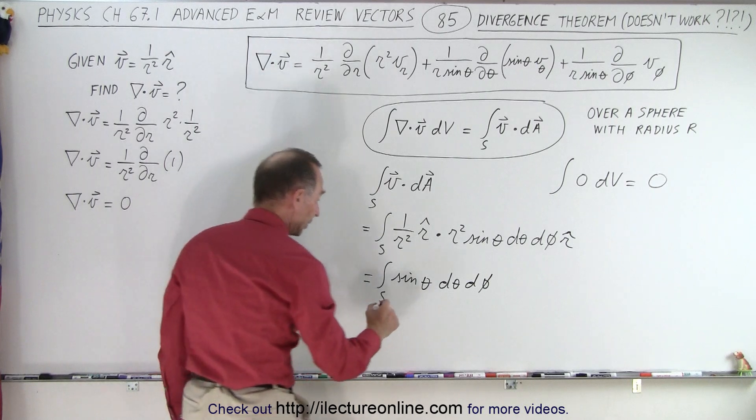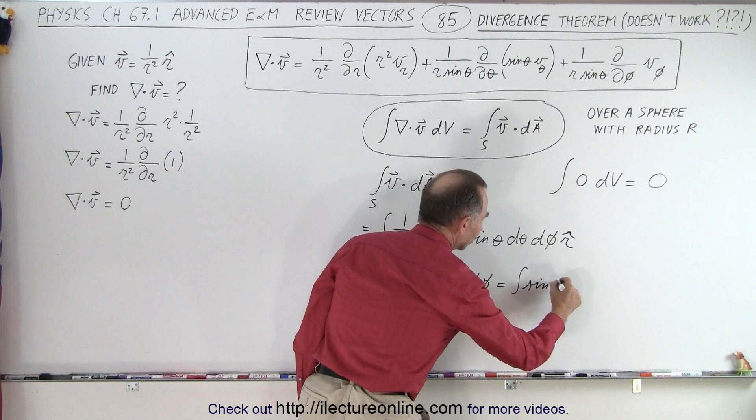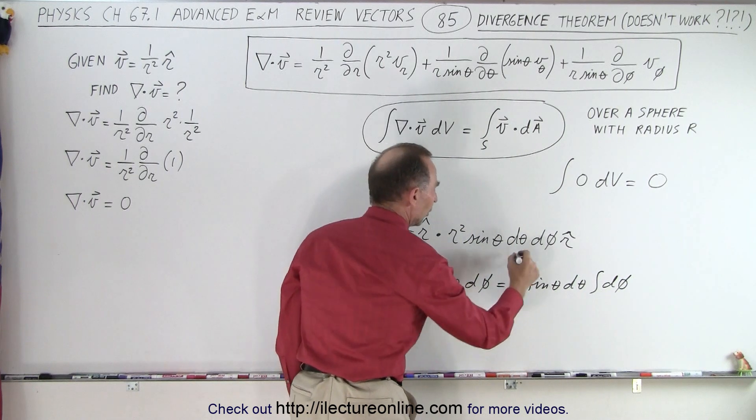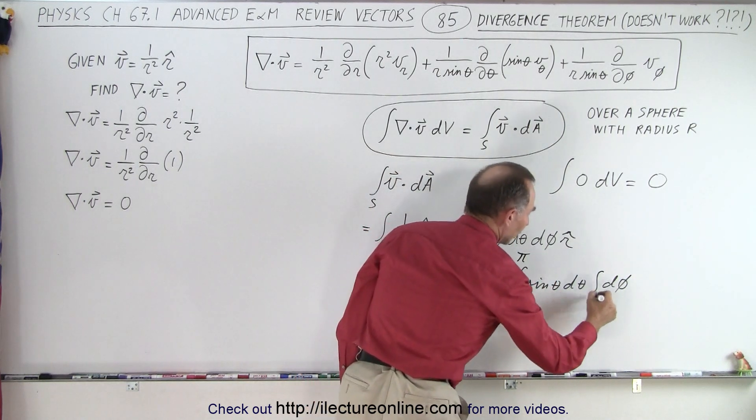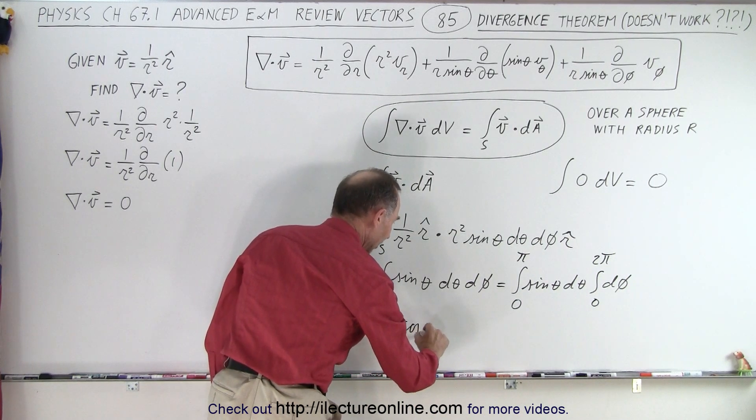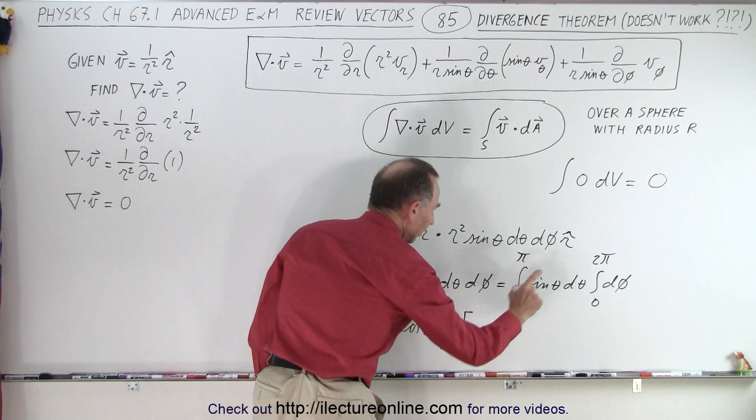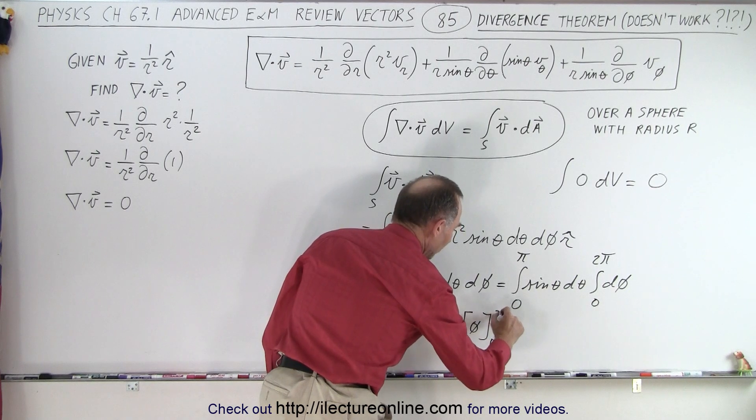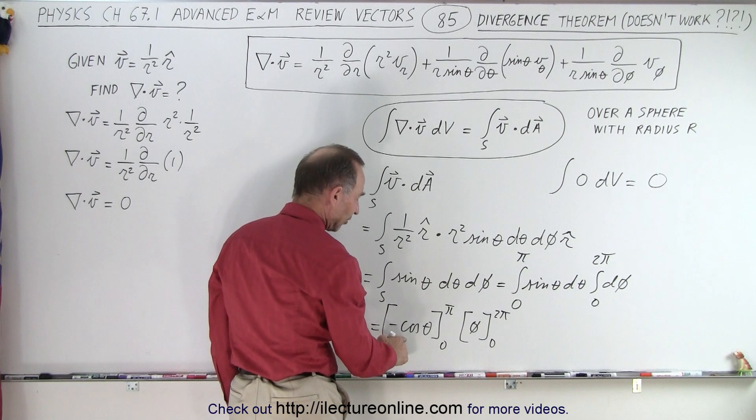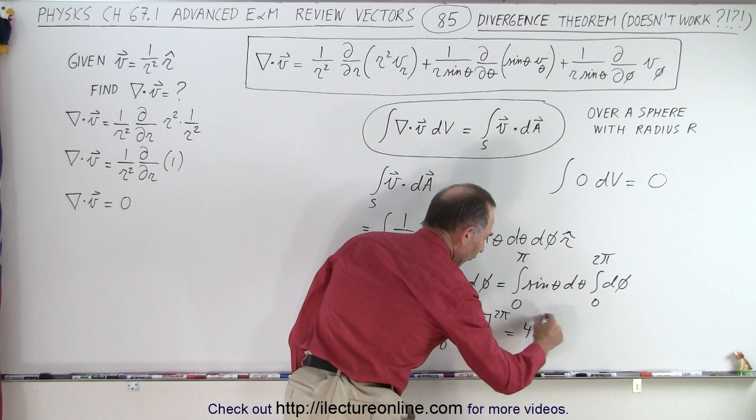Now if we integrate that, we realize that becomes a double integral of the sine of theta d theta and the integral of d phi. This integral goes from 0 to pi, and from 0 to 2 pi. When we integrate that, the first integral becomes the negative cosine of theta evaluated from 0 to pi, and we multiply that times phi evaluated from 0 to 2 pi. Notice that becomes familiar to us. That's going to be 1 plus 1 or equal to 2. This is going to be 2 pi. So the result is equal to 4 pi.